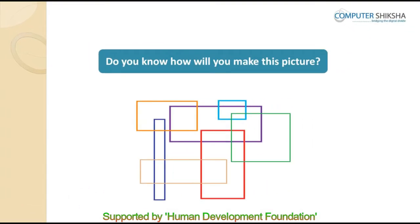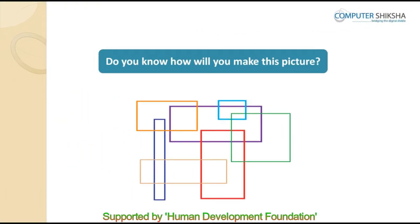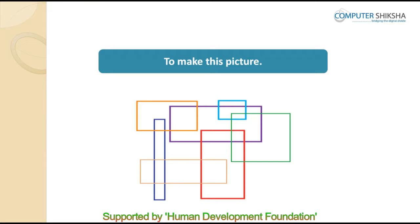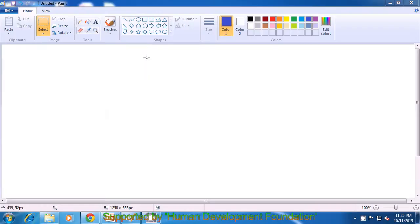Can you make the given picture? This picture is made by using the rectangle tool and color box 1. If you are able to make this picture, go ahead and draw it. Otherwise, let us watch the video to learn how to make this picture using the rectangle tool. To make this drawing, we go and select the rectangle tool, then go and select color palette 1 and select a color.